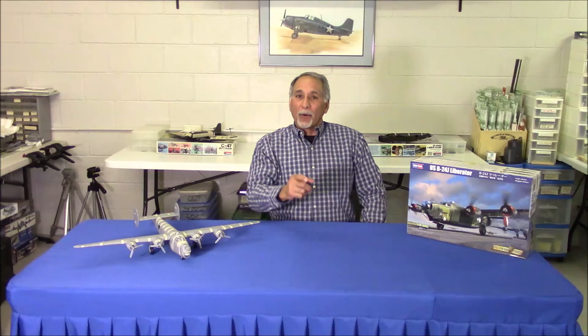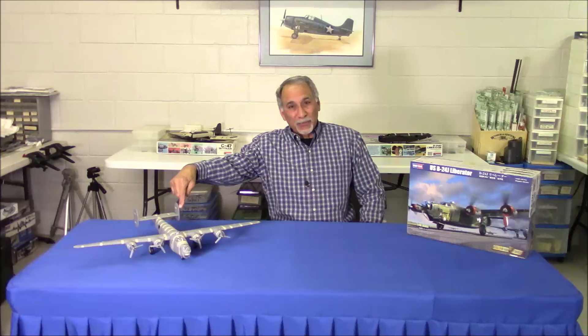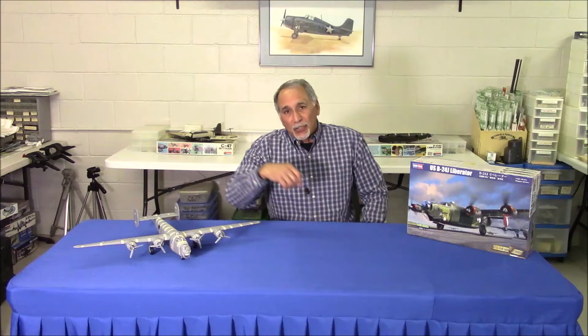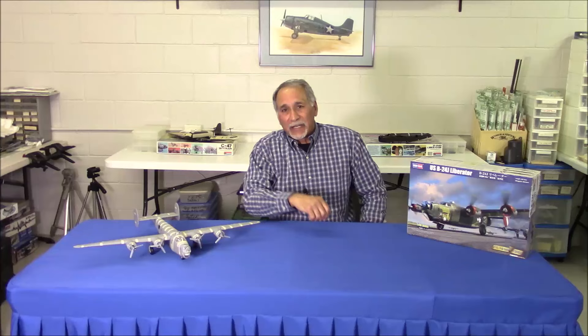Hey everybody, welcome to part two of our detailed tape-up review of the brand new Hobby Boss 1:48 scale B-24J, this monster right here. In part two we're going to focus on the interior and exterior of the fuselage, the wings, how the wings connect to the fuselage, and how the tail connects to the fuselage. Let's get started.